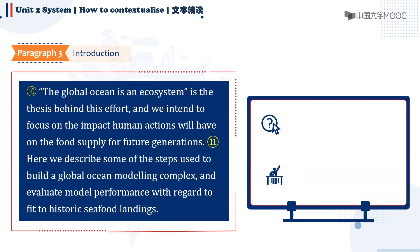'The global ocean is an ecosystem' is the thesis behind this effort. We intend to focus on the impact human actions will have on the food supply for future generations. Here, we describe some of the steps used to build a global ocean modeling complex and evaluate model performance with regard to fit to historic seafood landings.